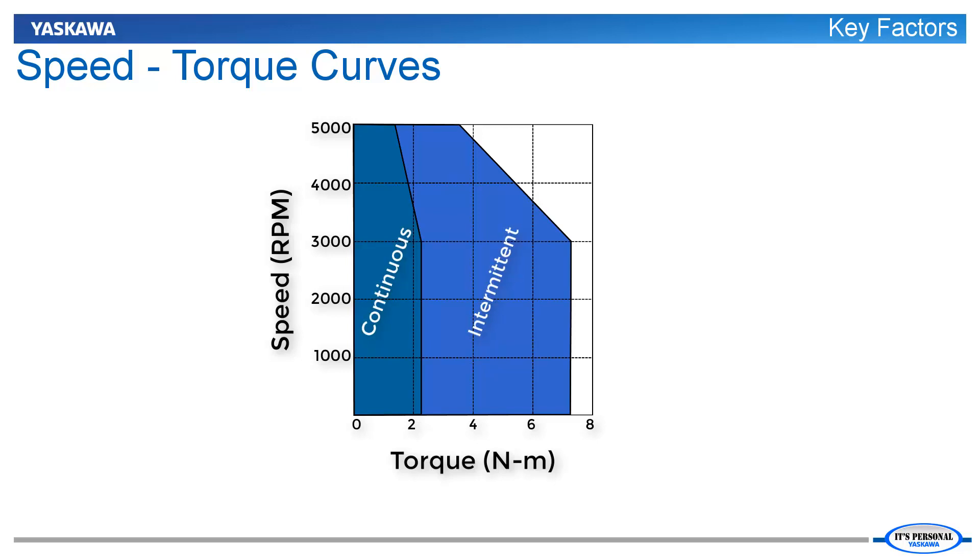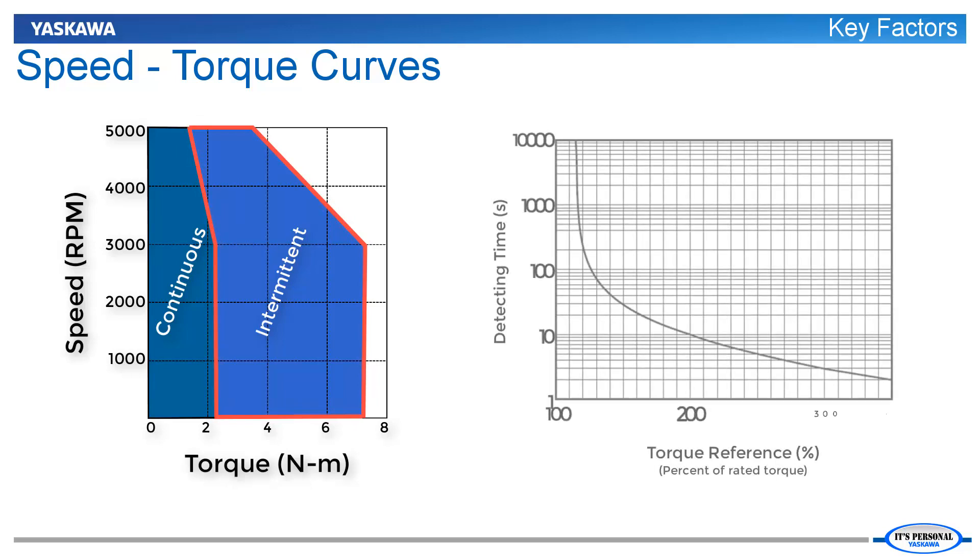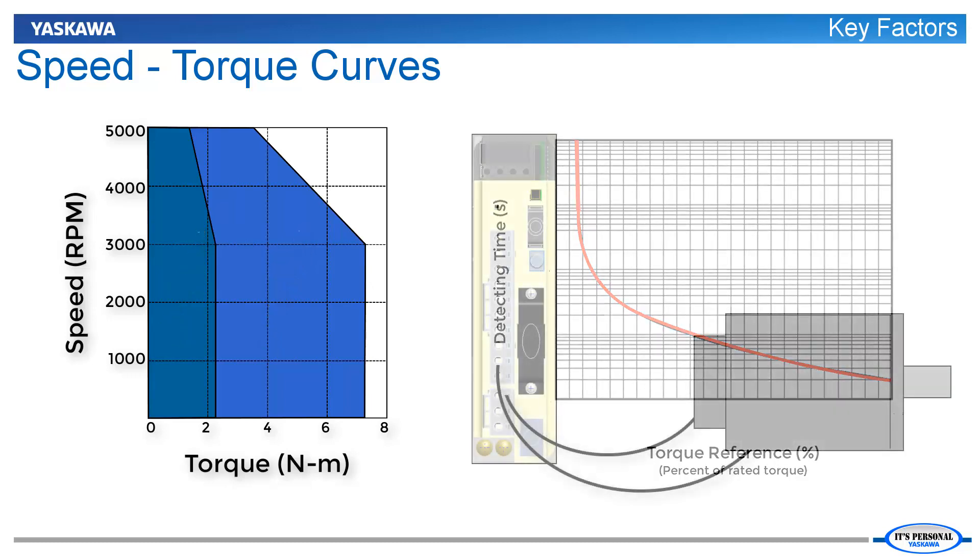If the combination of torque and speed required by the motor is found in the continuous region, then the motor can produce that torque and speed forever without any chance of overheating the motor. If the combination of torque and speed produced falls in the intermittent region, then the motor can only produce that speed and torque for a limited amount of time. If that time is exceeded, the motor will begin to overheat.